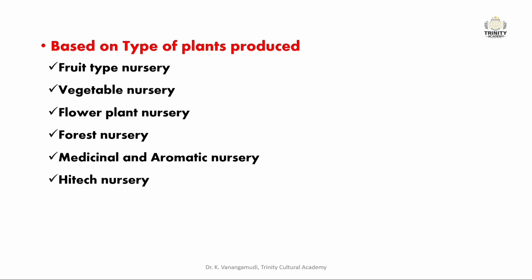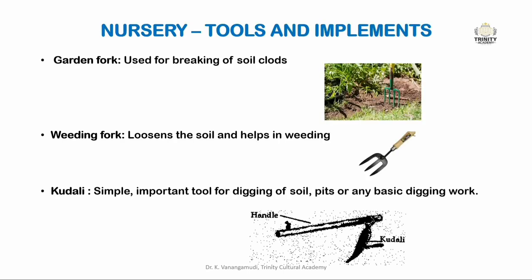The next chapter covers tools and implements used in the nursery area to carry out day-to-day cultural operations. The difference between the two: tools are used for simple and common tasks — for example, a spade — whereas implements are used rarely and are larger in size comparatively. We'll see each one in detail with their uses.